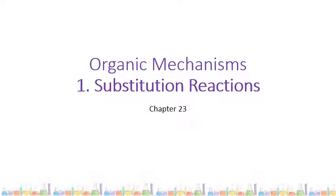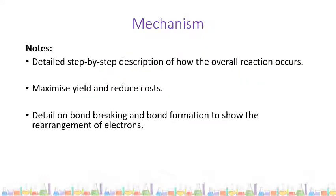In chapter 23 we look at organic mechanisms — the way organic reactions happen. The first type of reaction is substitution reactions. First we need to understand what a mechanism is: it's a detailed step-by-step description of how an overall reaction occurs. Studying mechanisms can allow us to maximize yield of product while reducing costs as much as possible. They show us detail on bond breaking and bond formation in order to show the rearrangement of electrons.